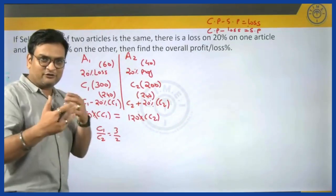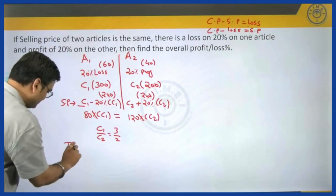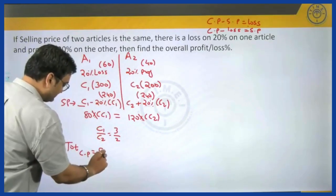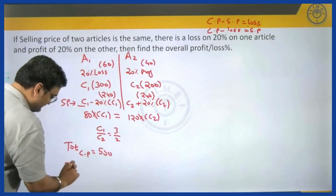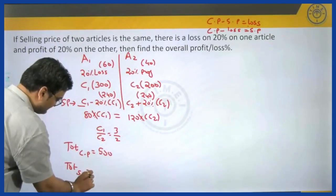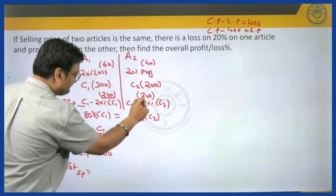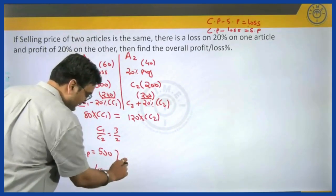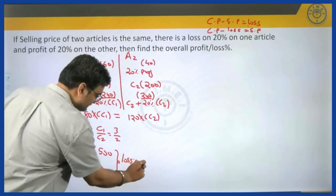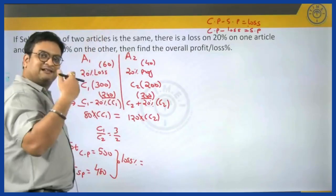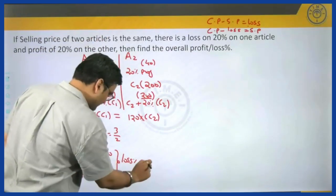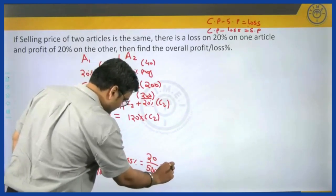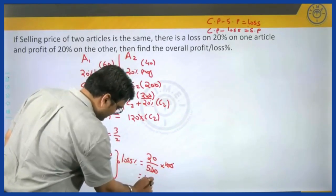Total cost price is 300 plus 200 equals 500. Total selling price is 240 plus 240 equals 480. Clearly there is a loss. Loss percentage is the loss amount of 20 rupees on CP of 500 into 100, which gives us 4 percent loss.